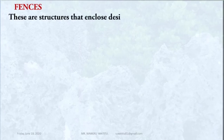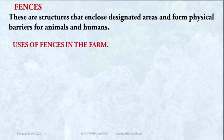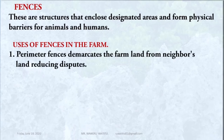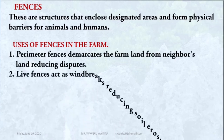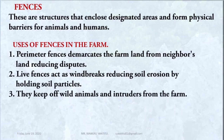What is the meaning of the term fences? We define fences as structures that enclose designated areas and form physical barriers for animals and humans. They are useful in various ways. Number one, perimeter fences demarcate the farmland from the neighbour's land, reducing disputes. Number two, life fences act as windbreaks, reducing soil erosion by holding soil particles. Number three, fences keep off wild animals and intruders from the farm.